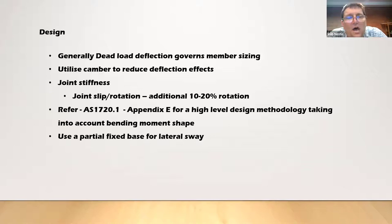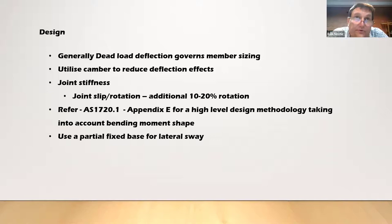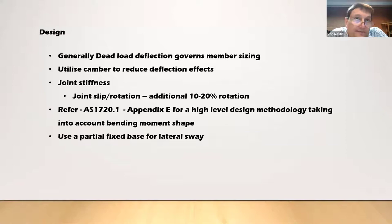Joint stiffness needs to be taken into account. Joint rotation at a knee or apex can add about 10–20% to dead load deflection. Small fasteners — screws and dowels — provide a stiffer joint than a small number of bolts. Bolts have slightly oversized holes so you need to account for that initial slip, whereas self-drilling screws are a tight fit with no initial slip, though you do get some embedment and additional joint rotation.